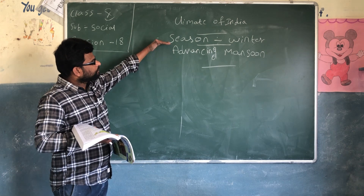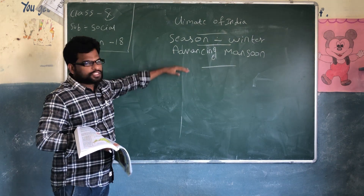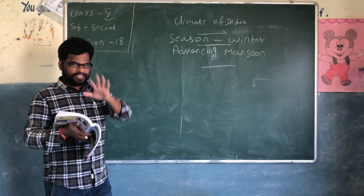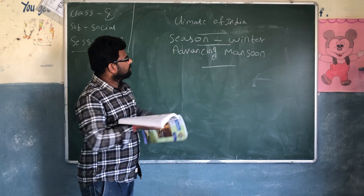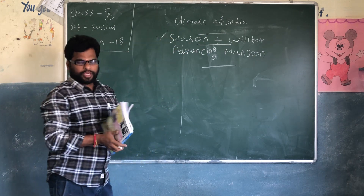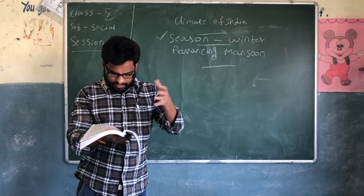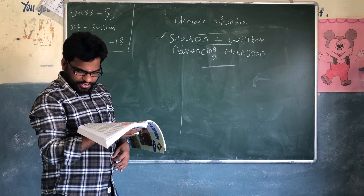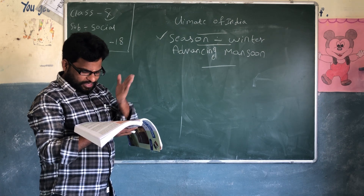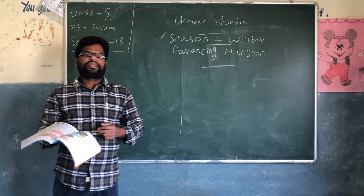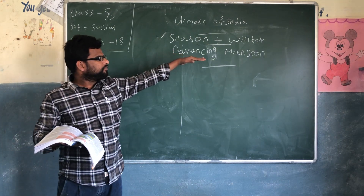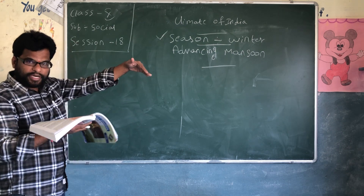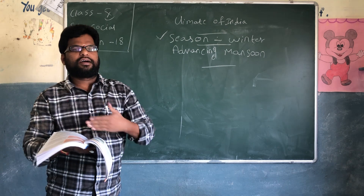Now we will discuss about the winter season and what is the advancing monsoon. The temperature in the Indian landmass considerably reduces from mid-November, and this cold season continues to February.